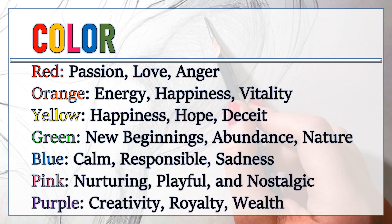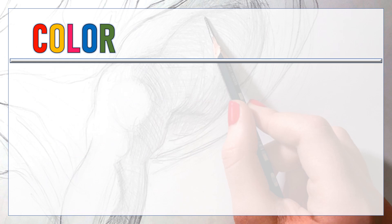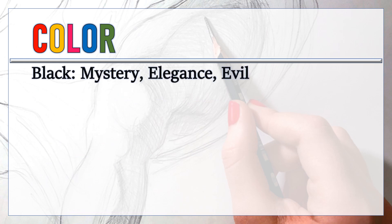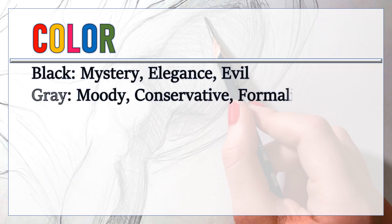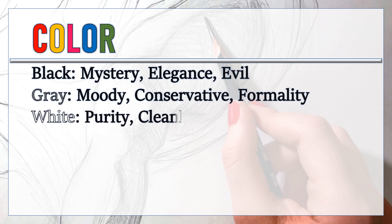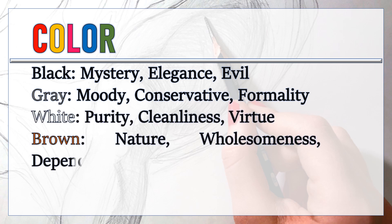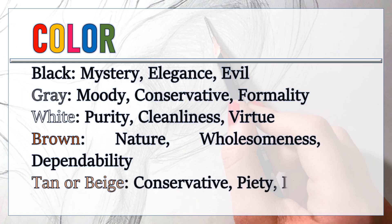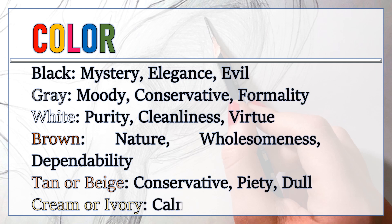Purple: creativity, royalty, wealth. Black: mystery, elegance, evil. Gray: moody, conservative, formality. White: purity, cleanliness, virtue. Brown: nature, wholesomeness, dependability. Tan or beige: conservative, piety, dull. Cream or ivory: calm, elegant, purity.